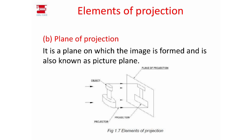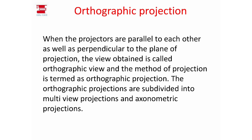The projectors are in the surface. The project is in the particular plane — that is the plane of projection. In orthographic projection, the projectors are parallel to each other, as well as perpendicular to the plane of projection. We have thus obtained the orthographic view, and that method of projection is called orthographic projection.